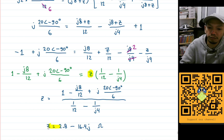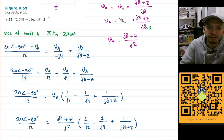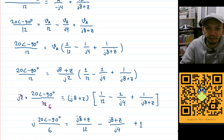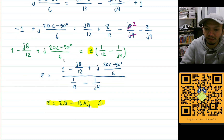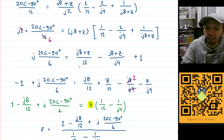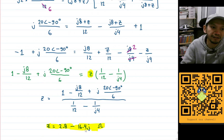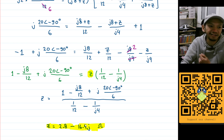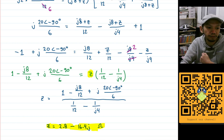That is the value of Z we are looking for. The answer is slightly different from the book, but it's quite close — 2.8 minus j16.4 ohms. That's likely just rounding error from the book. Hopefully I didn't make any mistakes in the calculation. See you in the next video, bye!